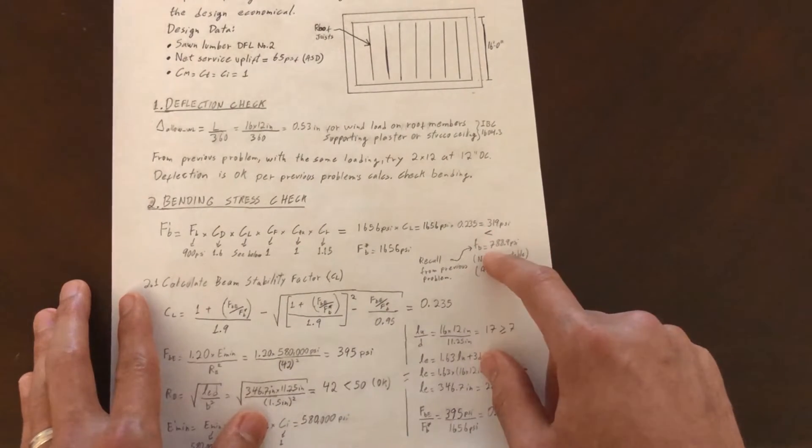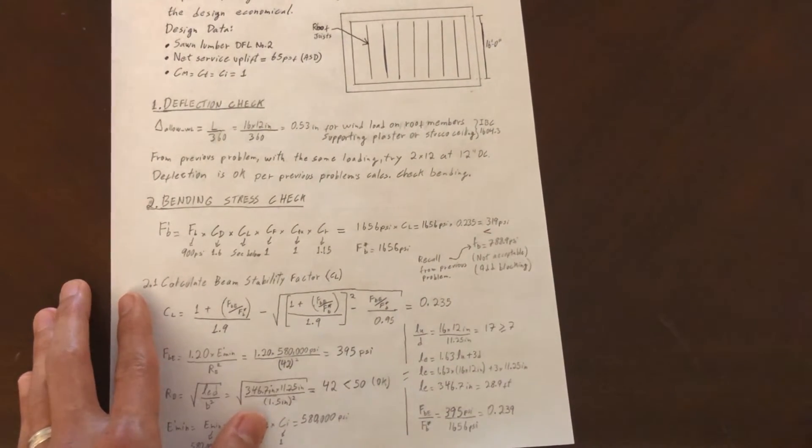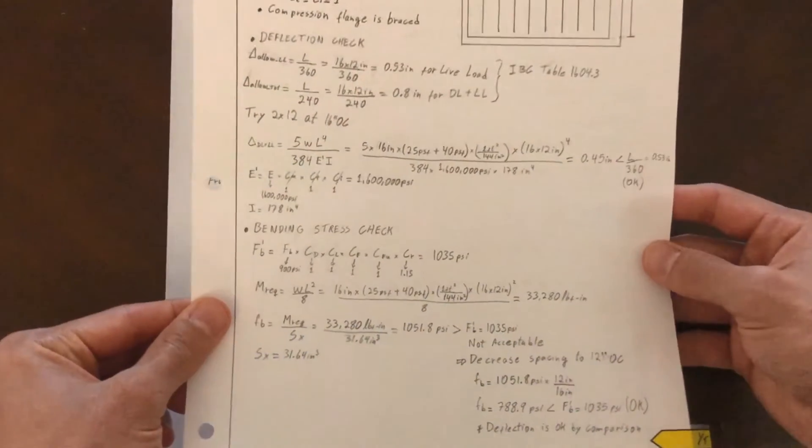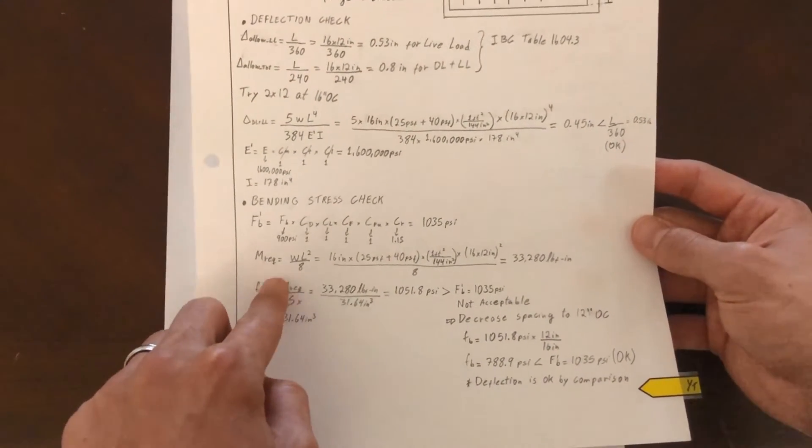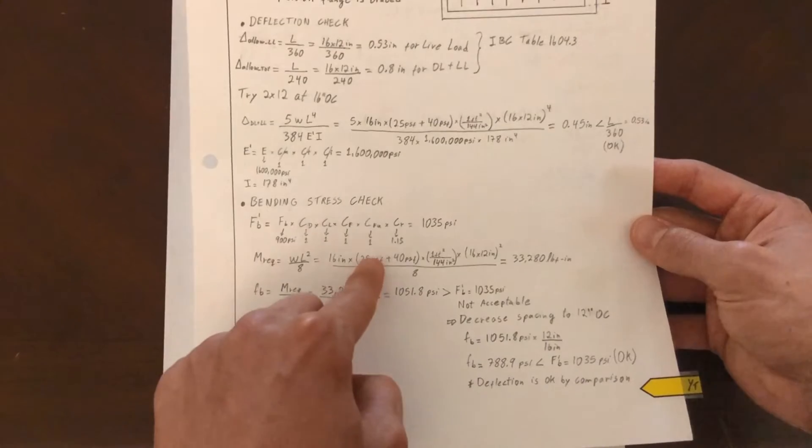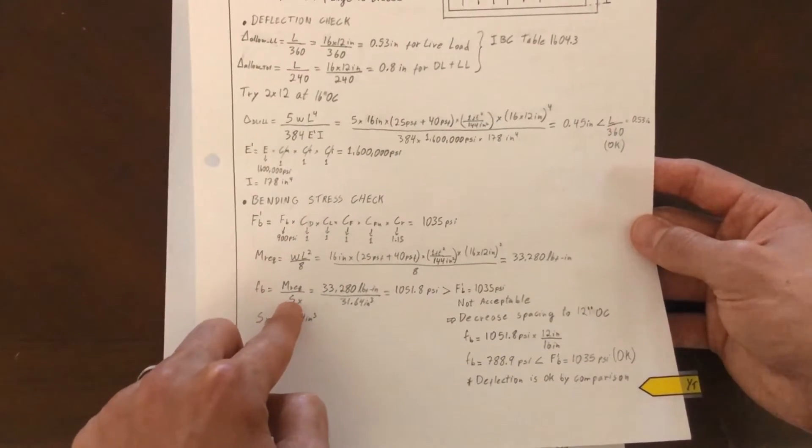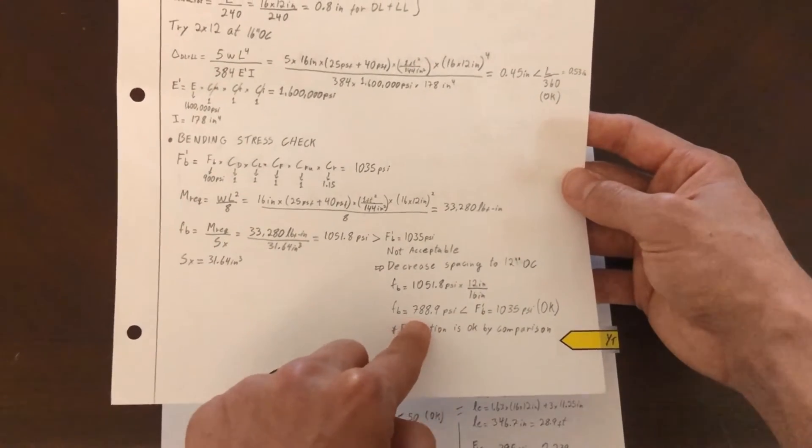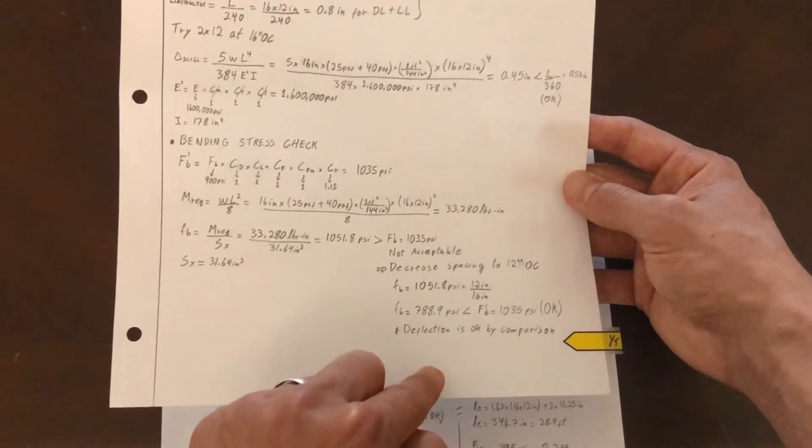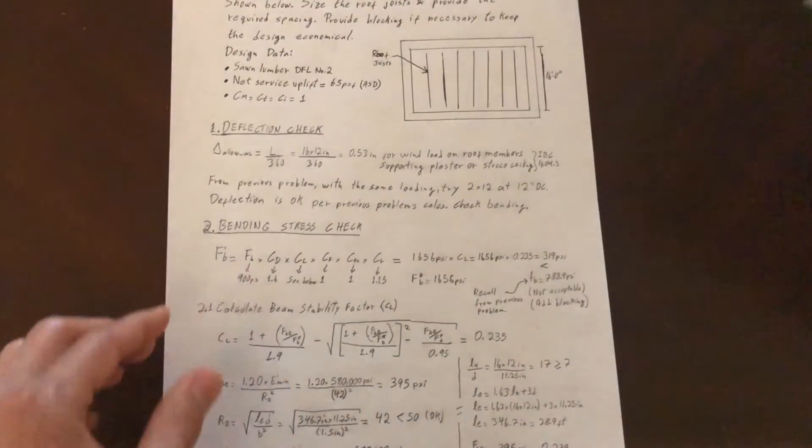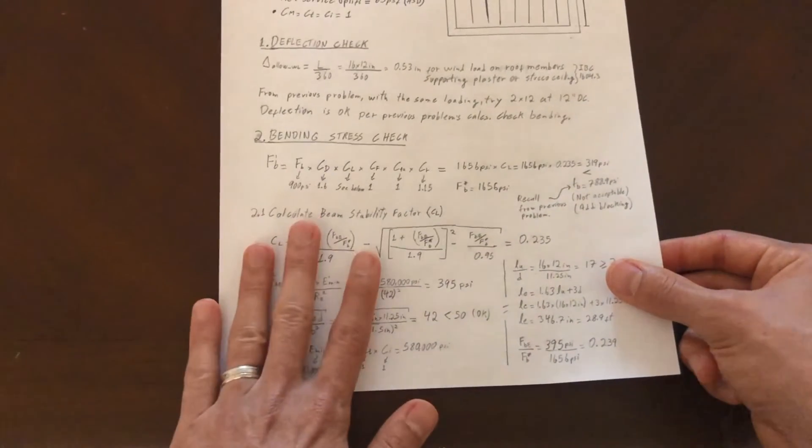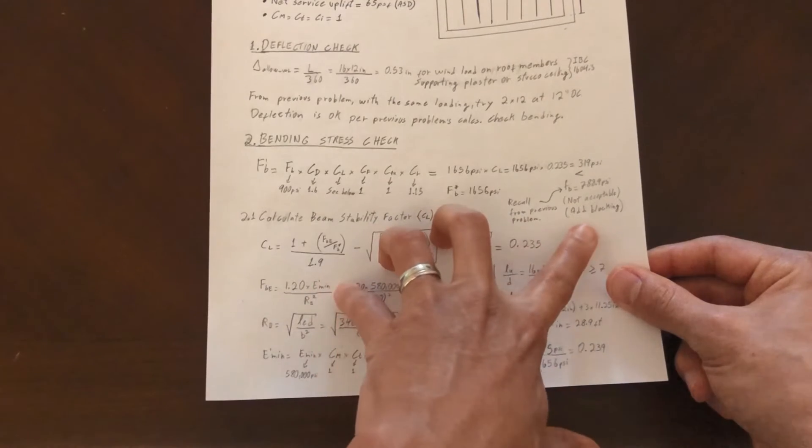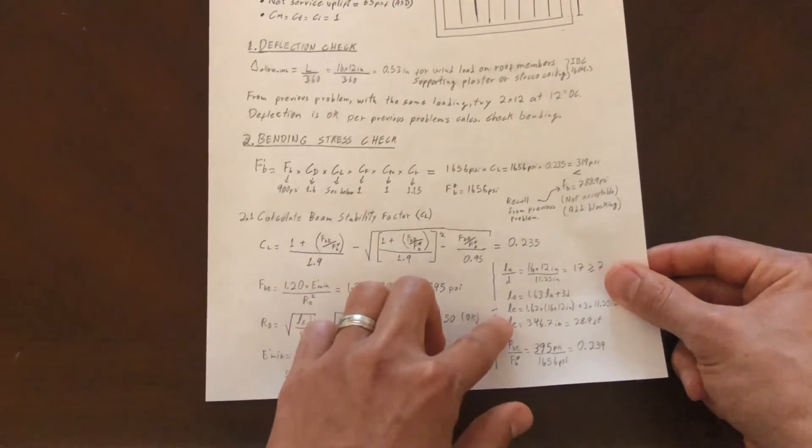This is very little as compared to our demand, which is 788.9 psi, so it's not acceptable. You may be wondering where I got this demand from. Well, I got this from our previous problem since I kept this the same as the previous problem. I didn't rewrite all of that, but our demand is just the required moment divided by the section modulus. Once we had decreased the spacing here to 12 inches, our demand was 788.9 psi, so that's why I'm using that demand.